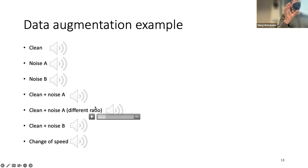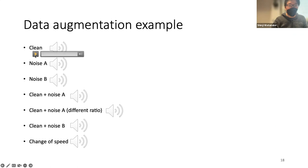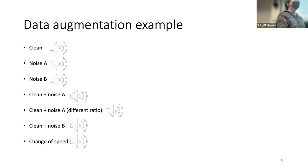These are classical data augmentation methods. After moving to neural networks and end-to-end ASR, a big innovation called SpecAugment emerged. It is simple but very powerful: we insert masks along the frequency and time axes of the spectrogram. The hyperparameters control the width of the masks and how often they are applied, and the masking is applied randomly during training.